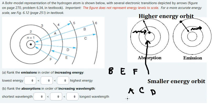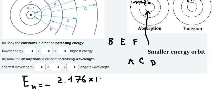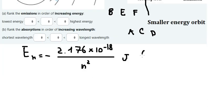Now we need to arrange these based on energy and wavelength. The formula we use is: En equals negative 2.176 multiplied by 10 to the power of negative 18, divided by n squared. The unit is joules — this gives us the energy of each orbit.